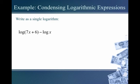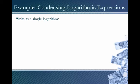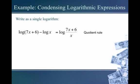Let's do another one: log of 7x plus 6 minus log of x. I see the subtraction of two logs — going backwards, subtraction means we get a fraction. Applying the quotient rule in reverse, we get log of (7x + 6) over x. Can we simplify? No — we cannot cancel the x's because the 7x is married to the plus 6. So that's our final answer.